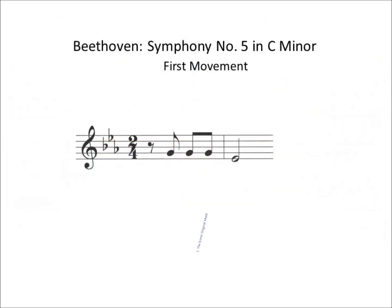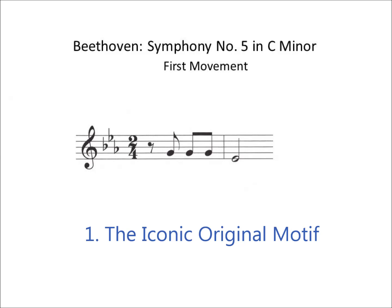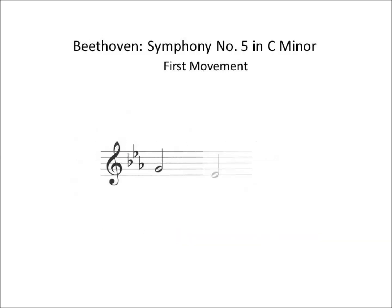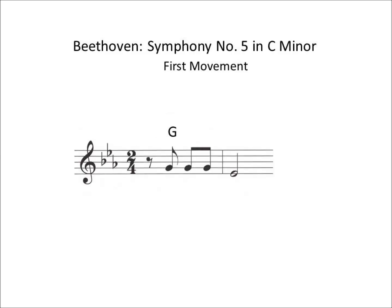I'd always heard that the first movement of the Fifth Symphony was based on this opening motif that I just played. Which consists of two different pitches, G and then skipping down a third to E-flat. But the G has three short notes, dropping down a third to the E-flat.